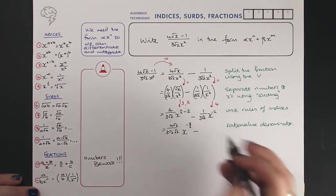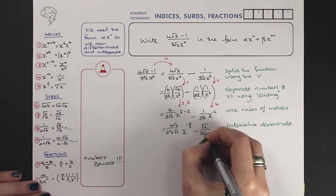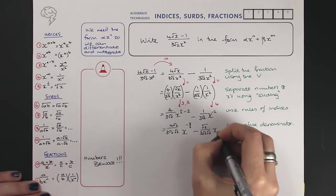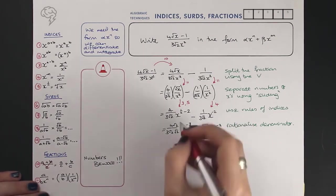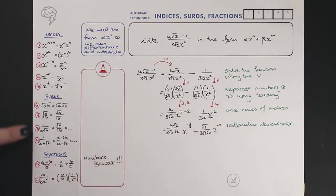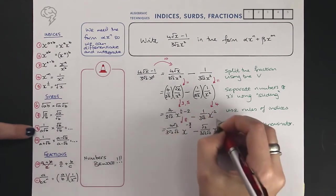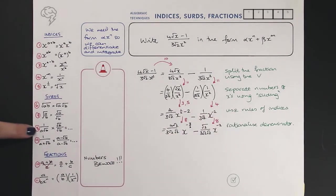What are we doing? Rationalizing the denominator. Multiplying by root two on the top and the bottom. And that's using rule eight on both terms.